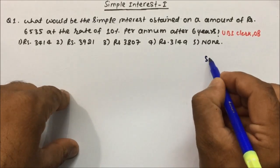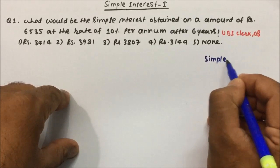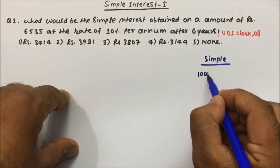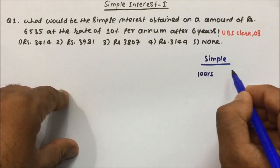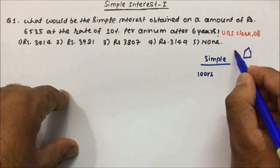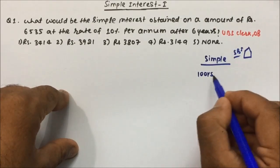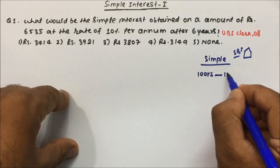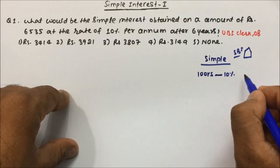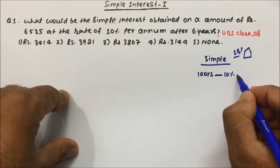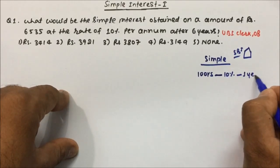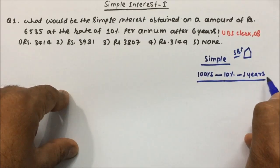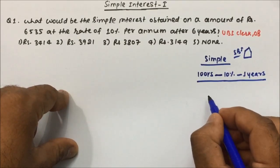In the case of simple interest, suppose you are investing 100 rupees in the bank — say State Bank of India. The rate of interest per year you will get is suppose 10%, and you are investing your money for one year.